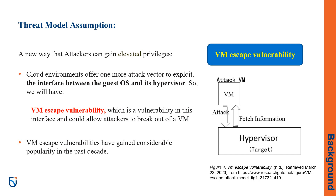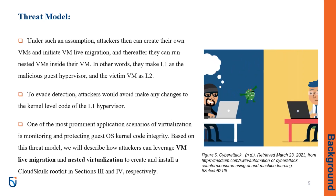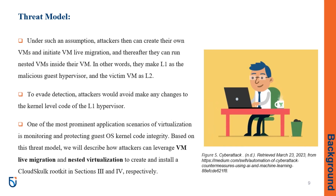Previous studies have talked about different ways attackers can gain elevated privileges on a system, and many of those techniques can be used in cloud environments too. But in addition to those, there is another way attackers can exploit a vulnerability called a VMscape vulnerability. This type of vulnerability happens when there is a weakness in the communication between the guest operating system and the hypervisor in a virtual machine, and it allows attackers to escape from the VM. VMscape vulnerabilities have become well known in recent years. For example, the first virtual machine escape exploit against VMware ESXi was implemented in 2019. So, let's say that attackers have already gained access to the system and they want to evade detection while creating a rootkit.